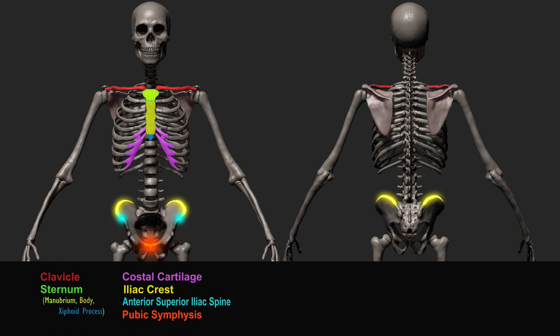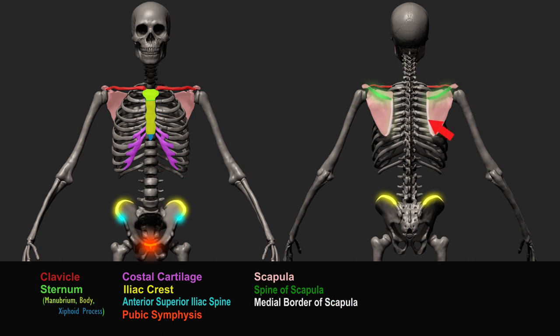The bone that connects the upper arm bone with the clavicle is the scapula. Right by the top of the scapula is a bony ridge called the spine of the scapula. The base of the scapula is called the medial border of the scapula. At the outer edge of the spine of the scapula is the acromion process, which serves as a canopy over the ball and socket joint of the shoulder girdle. These are the prominent parts of the scapula that can be used as guides when drawing or sculpting the back muscles.